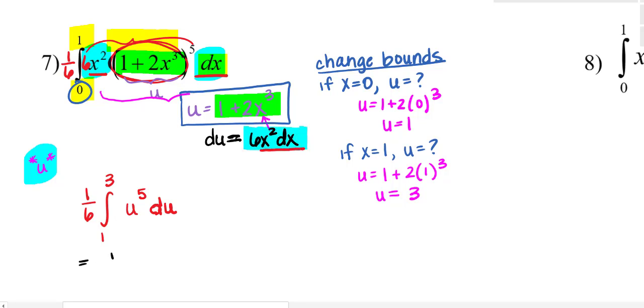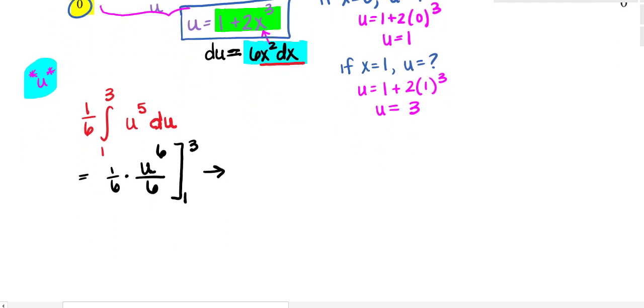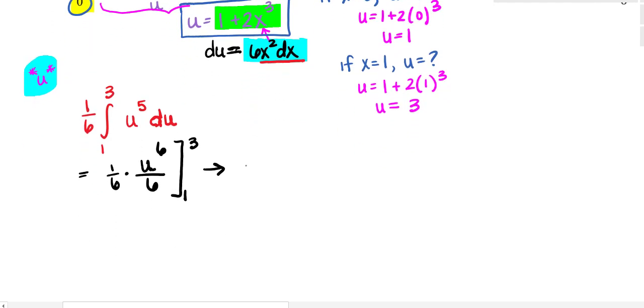Okay, so this will be 1 sixth times, then if I integrate u to the sixth over 6, and I'm going from u equals 1 to u equals 3. So here's the benefit of us changing our bounds. I now just have 1 36th times u to the sixth, and I can substitute because my bounds are u's. This 1 and this 3 are u values.